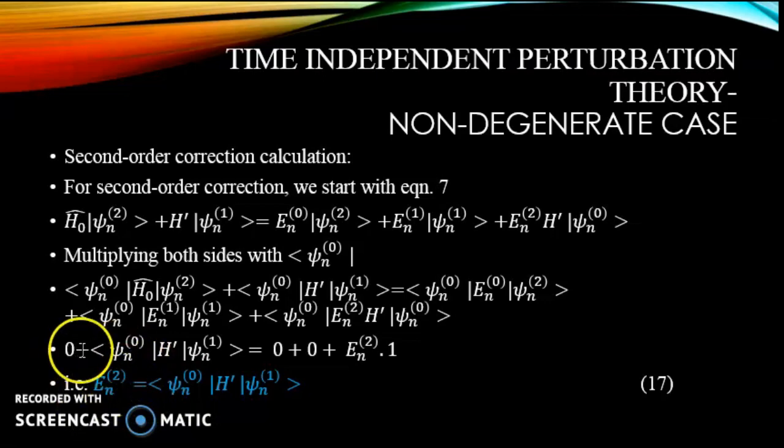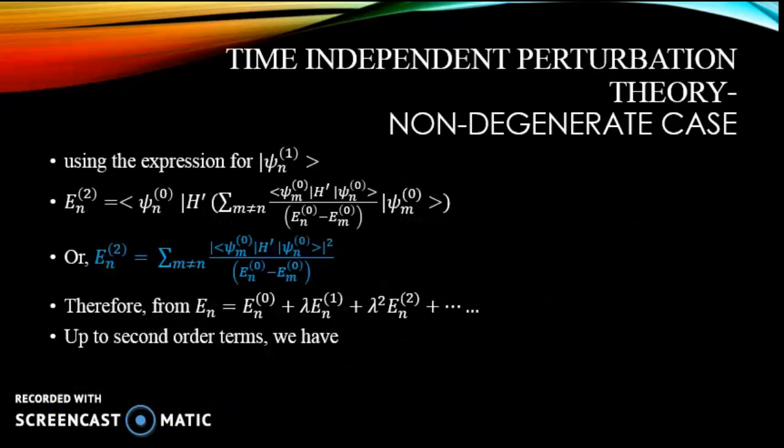Finally from this one we have E_n^(2) equal to ⟨ψ_n^(0)|H'|ψ_n^(1)⟩. Using the expression for |ψ_n^(1)⟩ coming from the previous slides, we have E_n^(2) equal to ⟨ψ_n^(0)|H'| and this whole expression for ψ_n^(1). Therefore, from E_n equal to E_n^(0) plus λE_n^(1) plus λ²E_n^(2) plus so on,